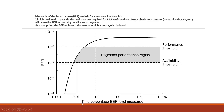This graph shows the bit error rate (BER) level measured against time percentage for a communication link. What we require is availability of the satellite-to-earth link for 99.9% of the time. This is the availability threshold below which the bit error rate is acceptable and signal quality is good. The BER should be less than 10 to the power of minus 6 for acceptable performance.